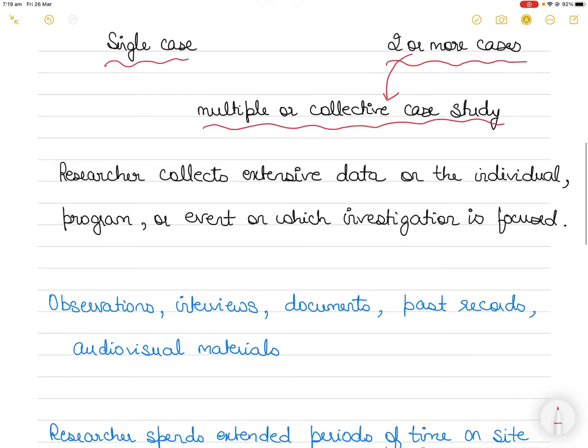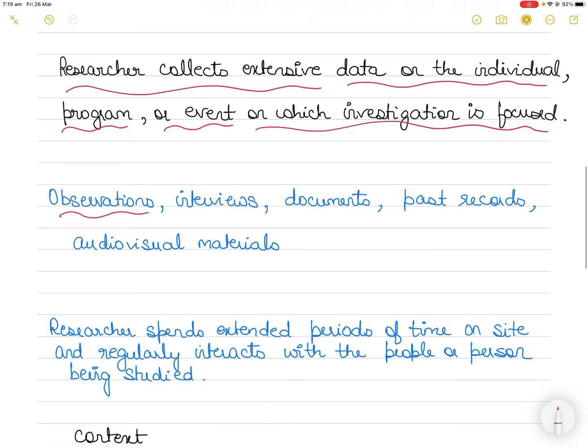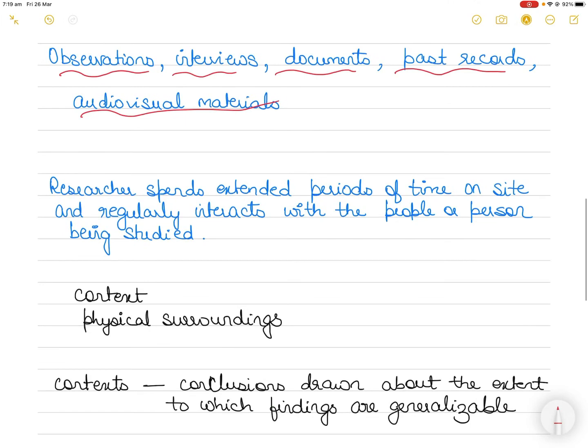In a typical case study, the researcher collects extensive data on the individual or individuals, program or programs, or event or events on which the investigation is focused. These data often include observations, interviews, documents such as newspaper articles, past records such as previous student test scores, and audio-visual materials such as photographs, videotapes, and audio tapes.